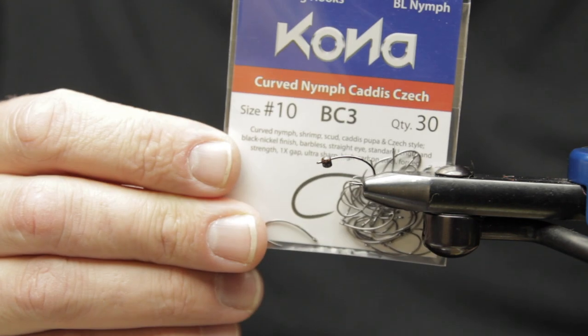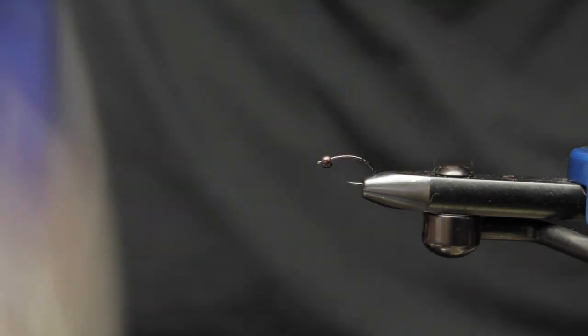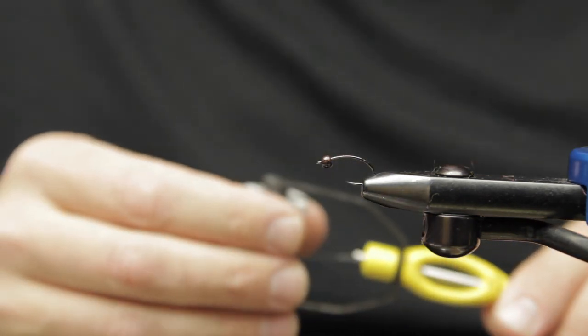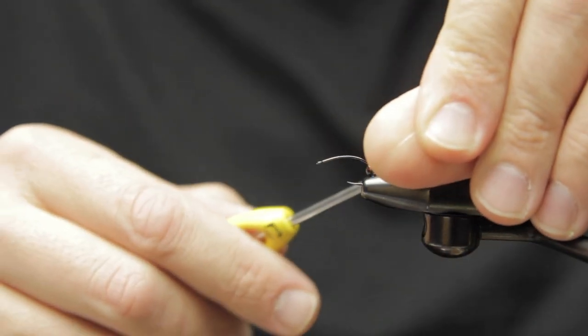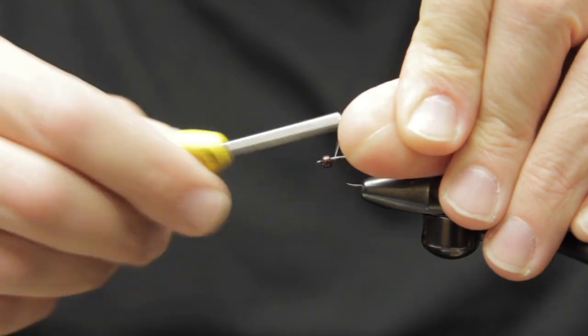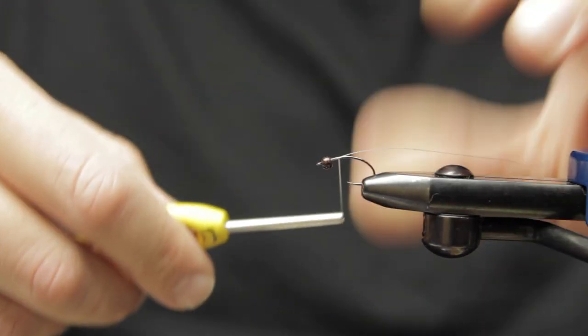Hey guys, Matt here from Loon Outdoors. Today we're tying a fun little furled caddis pattern. This is a new hook, Kona BC3 curved hook, with a 2.8 mil tungsten bead and Mobelus 50D for thread. We'll start by taking some wraps down the body of the hook shank, kind of deep towards where a barb would normally be.